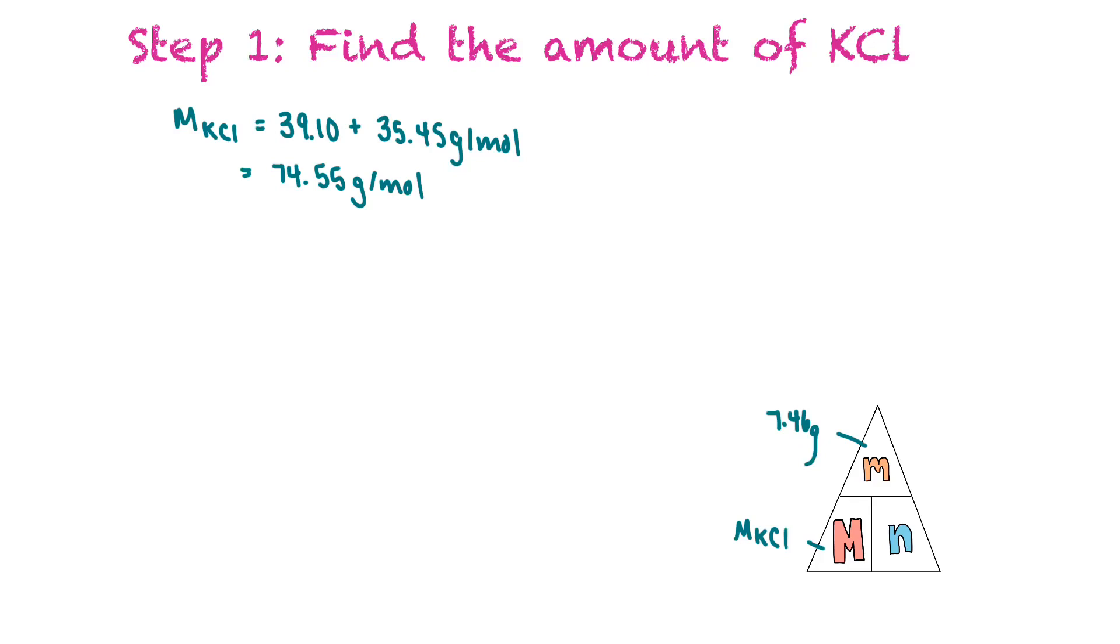We can find moles by dividing the mass over the molar mass. So 7.46 grams over 74.55 grams per mole equals 0.10067 moles. We won't round until we're finally done solving, so we'll leave that unrounded for now.